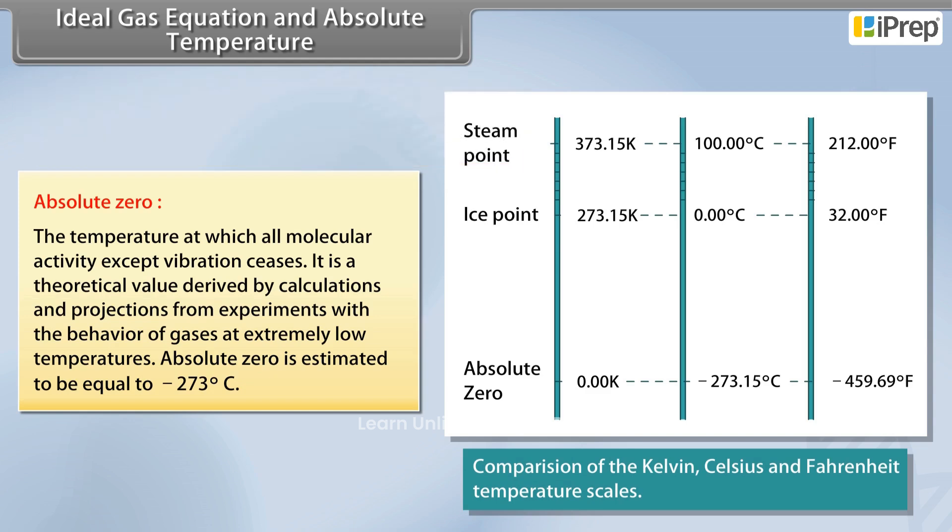It is a theoretical value derived by calculations and projections from experiments with the behavior of gases at extremely low temperatures. Absolute Zero is estimated to be equal to minus 273 degrees Celsius.